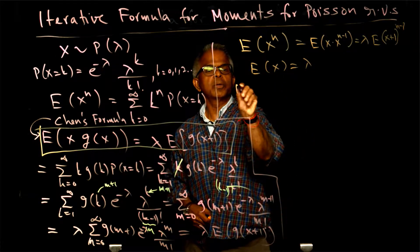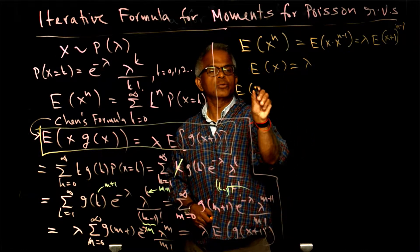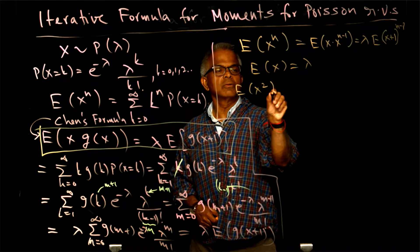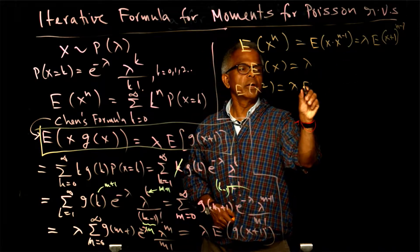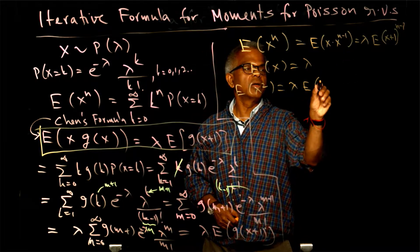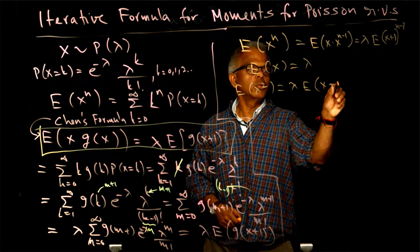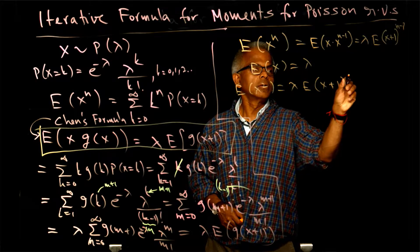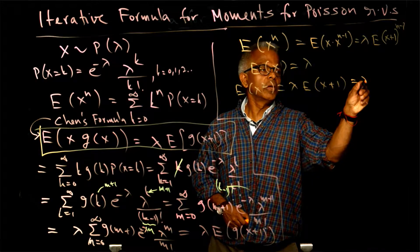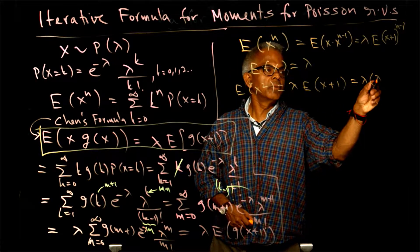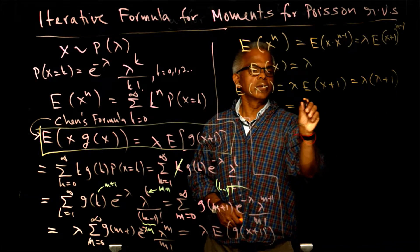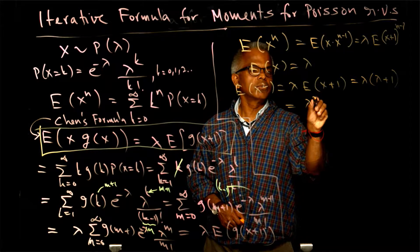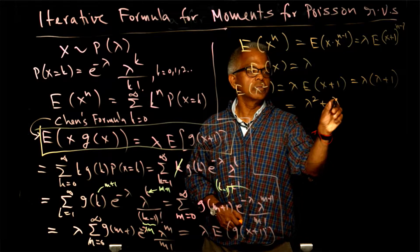So, the expected value of x squared is — from here — lambda multiplied by the expected value of (x+1). That is going to be lambda multiplied by (lambda + 1), which gives us lambda squared plus lambda.